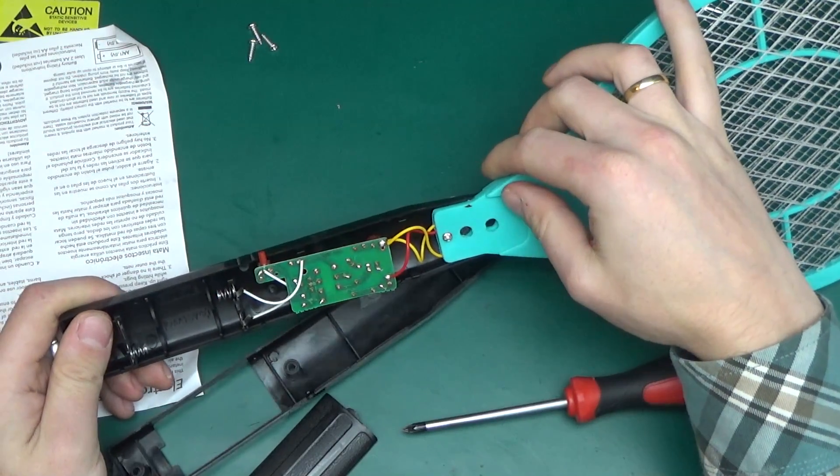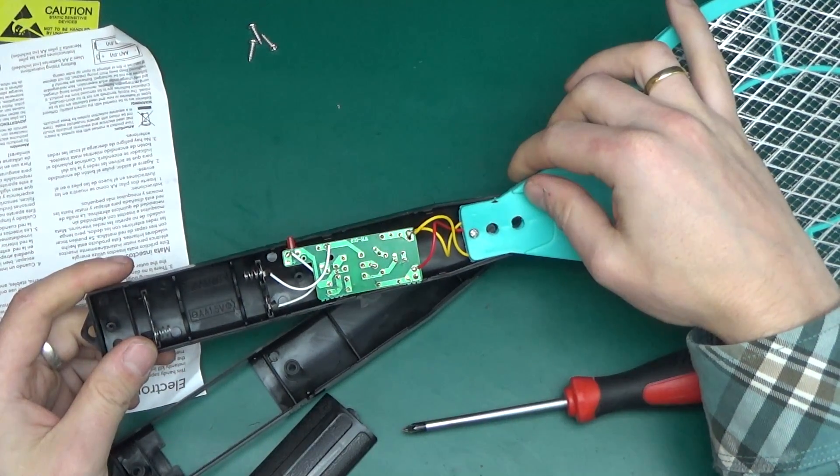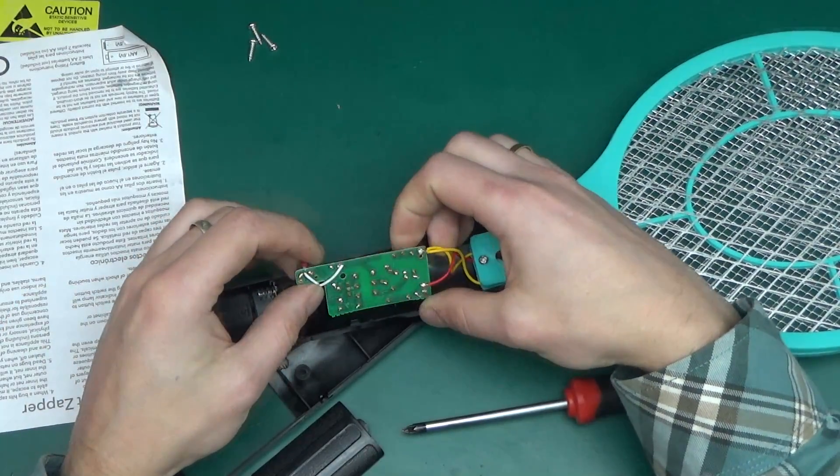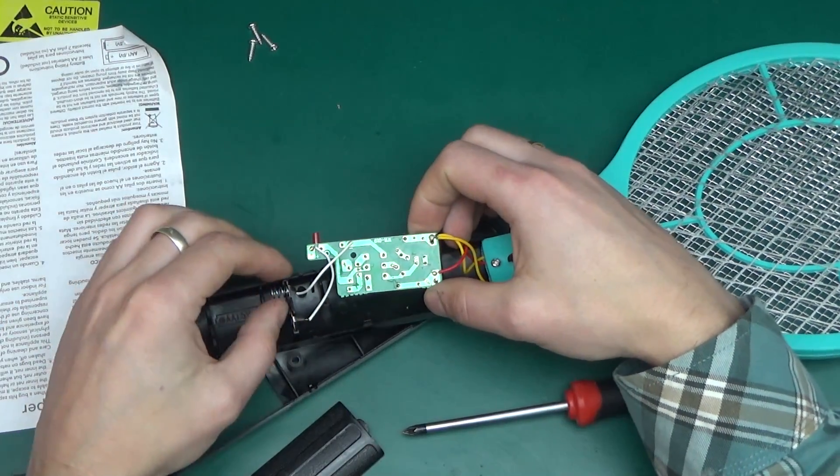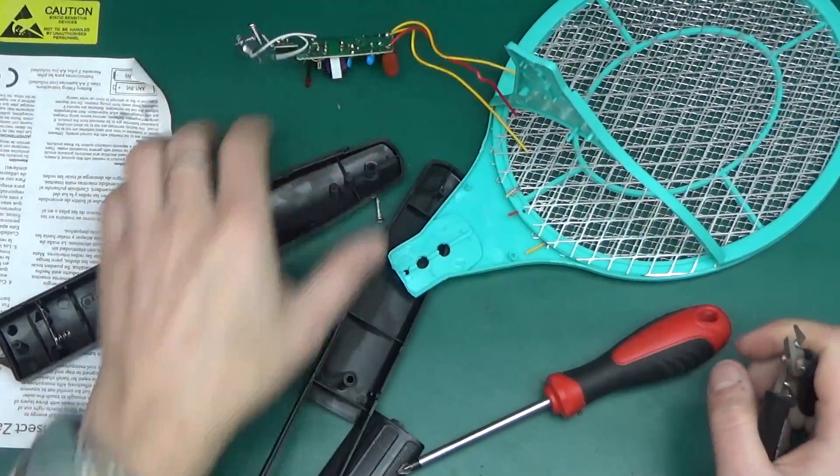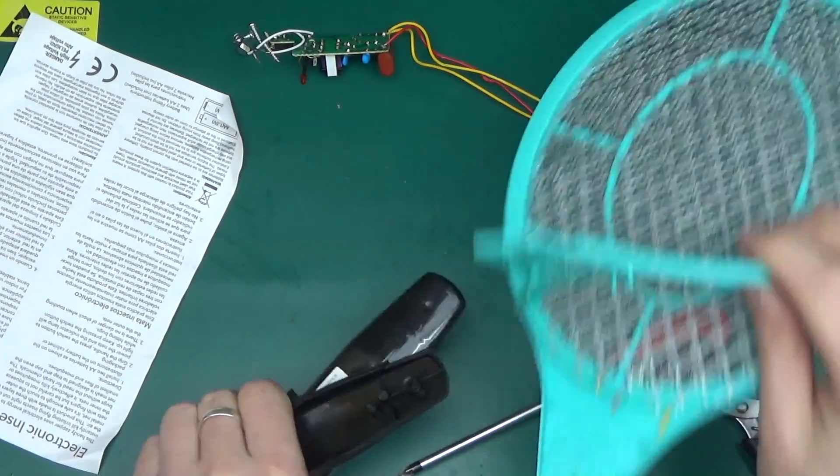And here is the circuit board. As you can see there isn't much on it. It will be interesting to work out what the circuit actually is. I can dispose of all the plastic because I've got no interest in it.